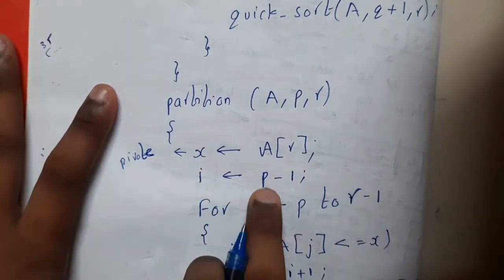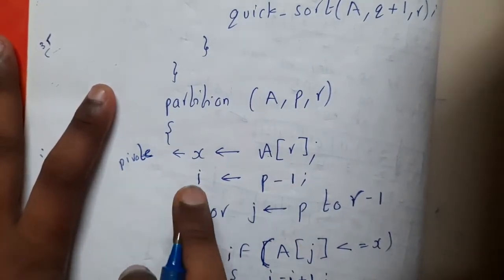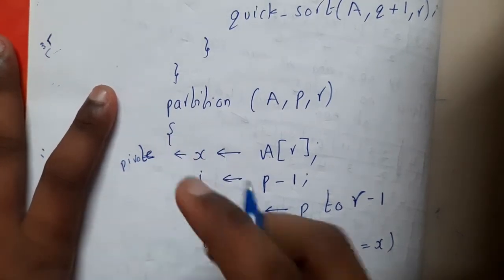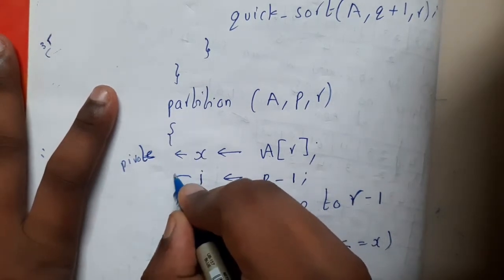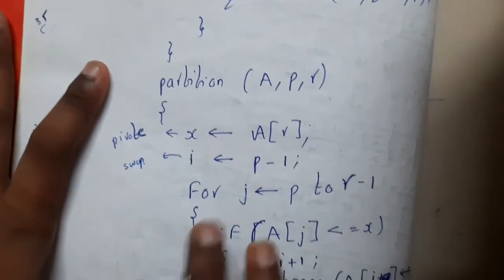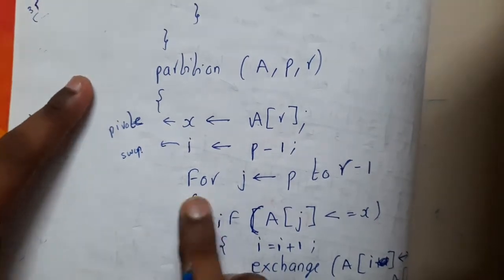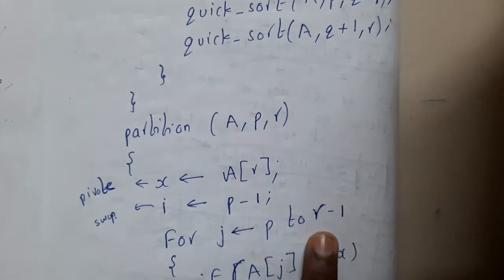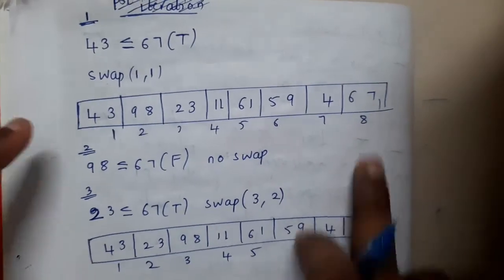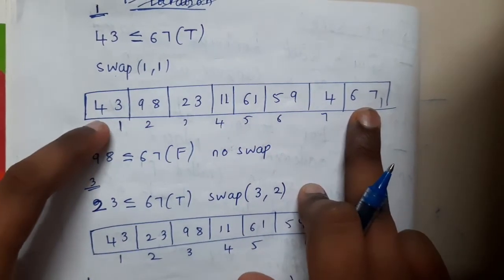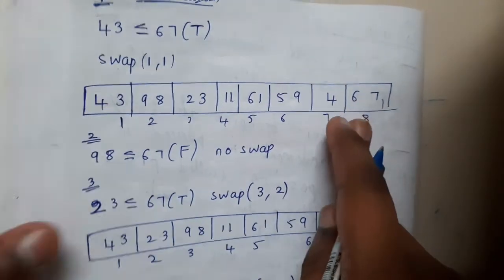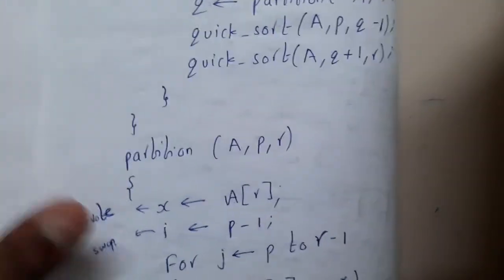We discussed about pivot — you'll be taking some random value or the last value. Then p minus one equals i. We are designing this i for swapping elements, so you can assume that i is for swap. Then you write a for loop for j from p to r minus one. You will not be comparing the last element — if you recall the algorithm we discussed with 67, we compared 67 with 43, 98, 23 but didn't compare with 8.